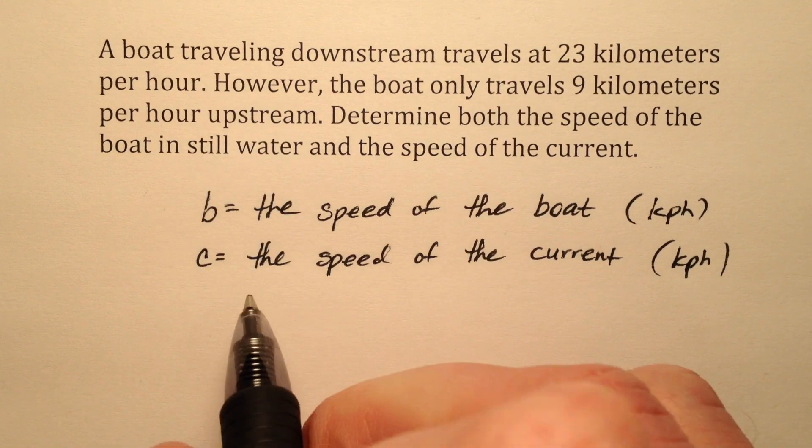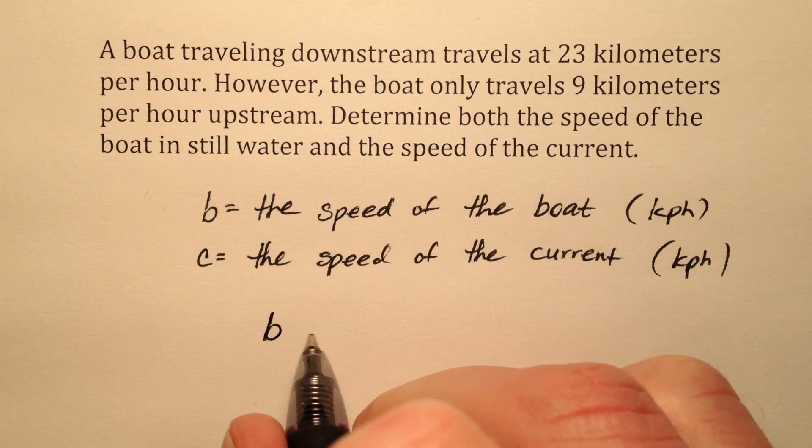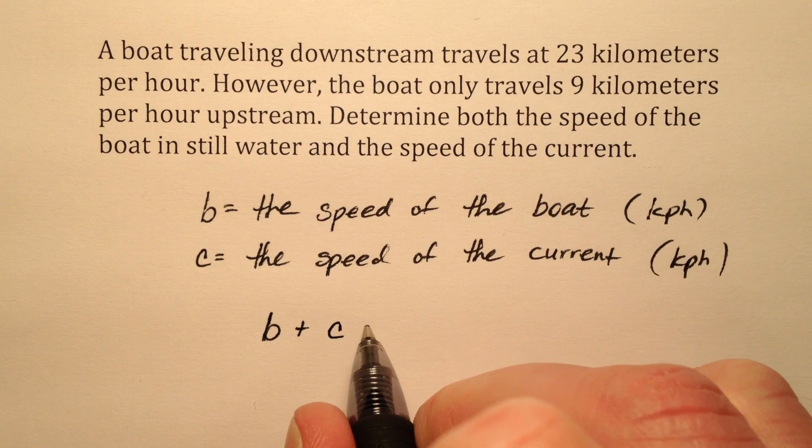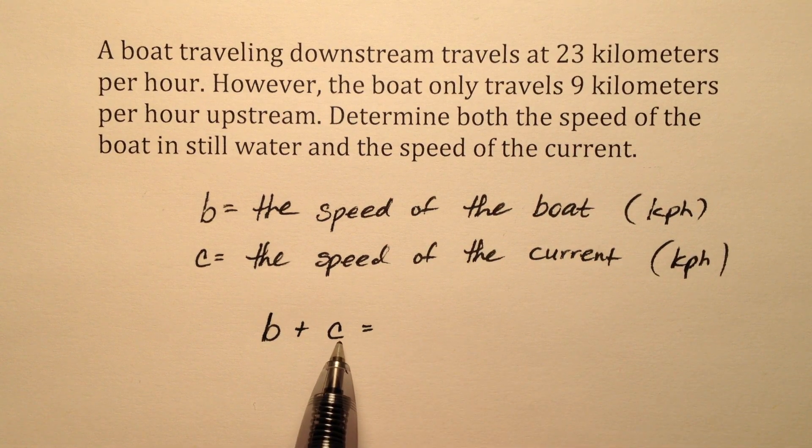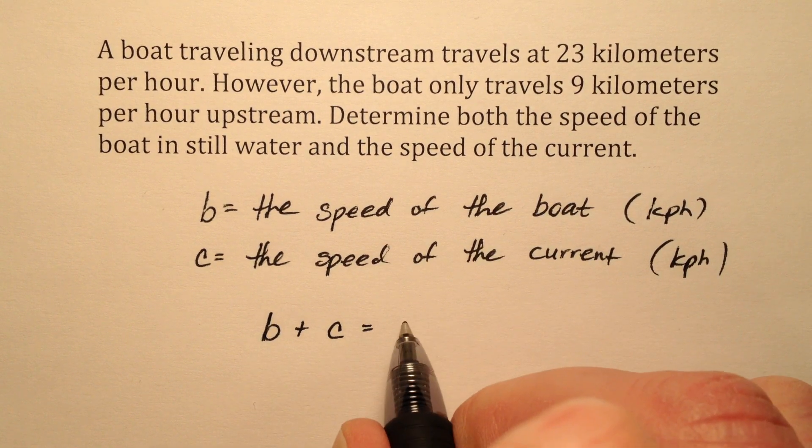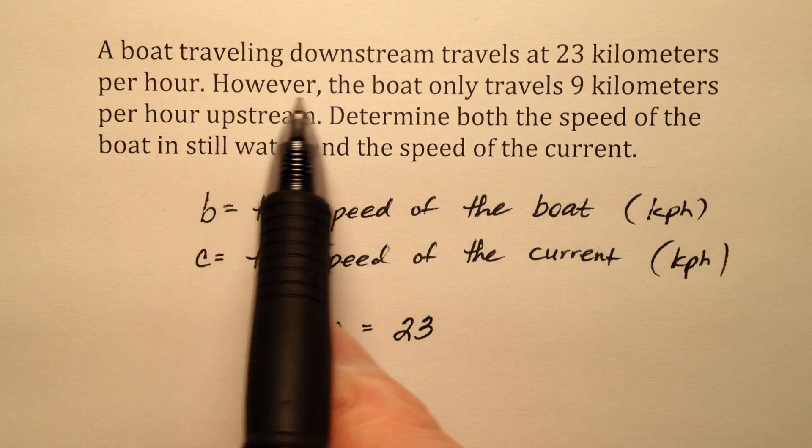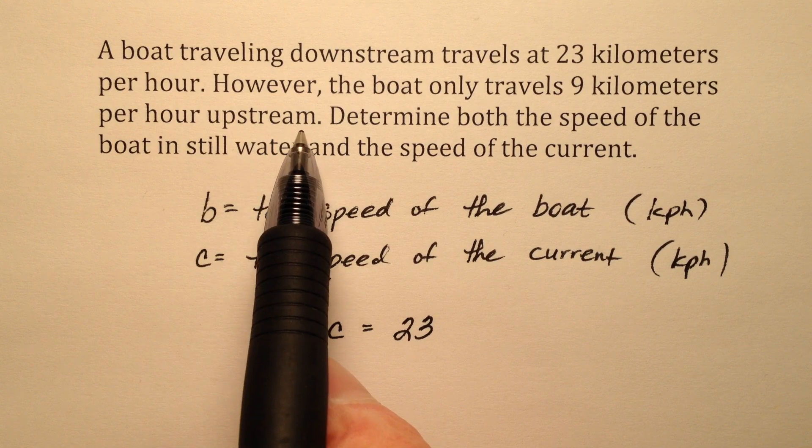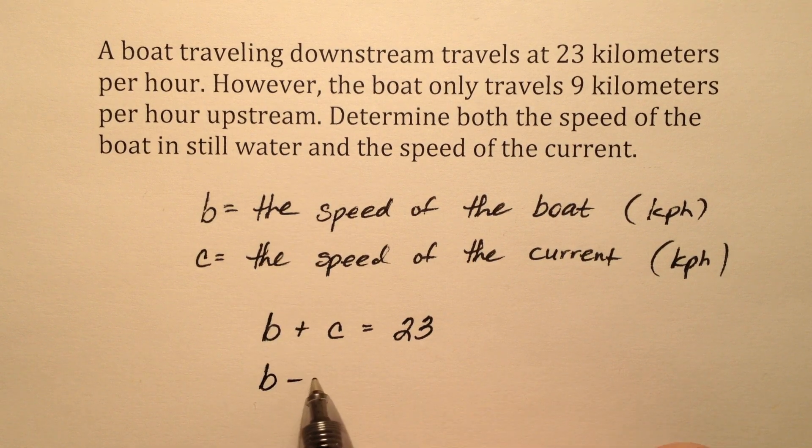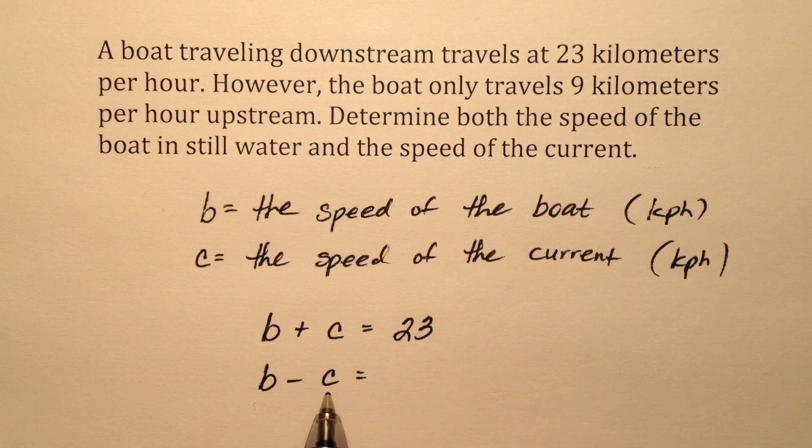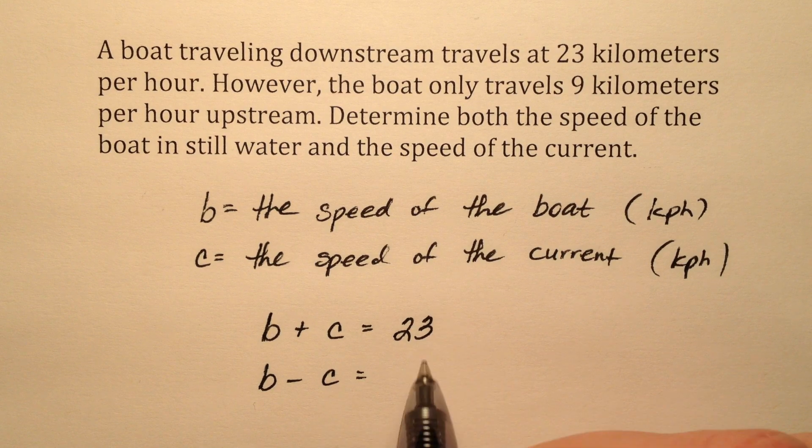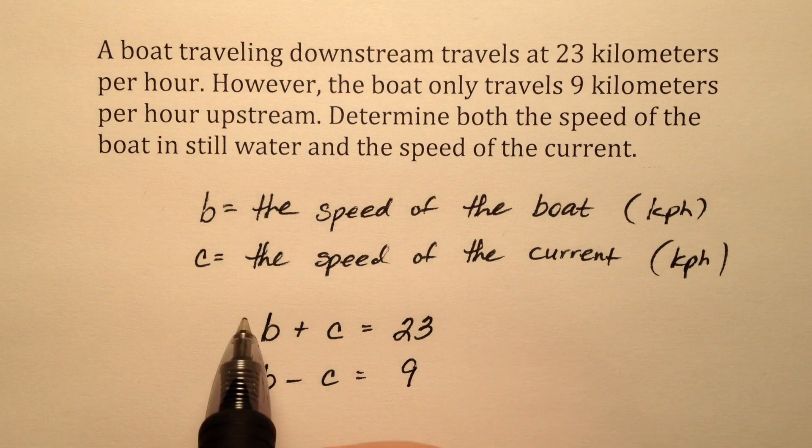Now we have our variable definitions, so let's write our system. Traveling downstream is the speed of the boat plus the speed of the current, because both are traveling in the same direction, and that's 23 kilometers per hour, so b + c = 23. Going upstream means the speed of the boat minus the speed of the current, because the current is fighting against the boat, and that's 9 kilometers per hour, so b - c = 9.